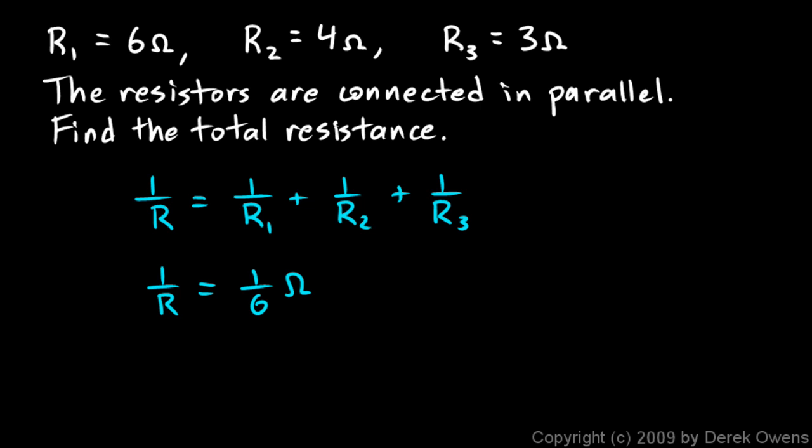Now be careful here. When you write 1 over R1, R1 is 6 ohms. Don't write 1 sixth of an ohm like that. R1 is in the denominator and R1 is 6 ohms, so the unit, the ohms, should be attached to the 6. It should be written like this: 1 over 6 ohms. R2 is 4 ohms, so 1 over R2 is 1 over 4 ohms, and R3 is 3 ohms, so 1 over R3 is 1 over 3 ohms. Those ohms are all in the denominator.